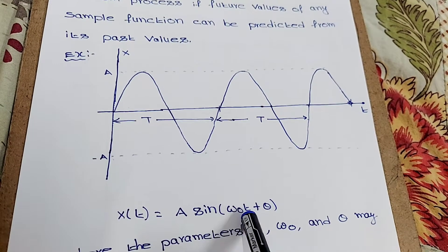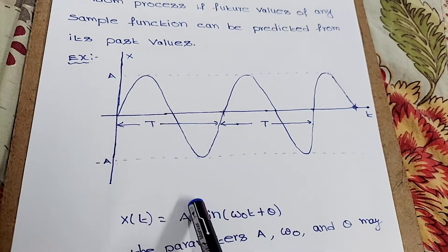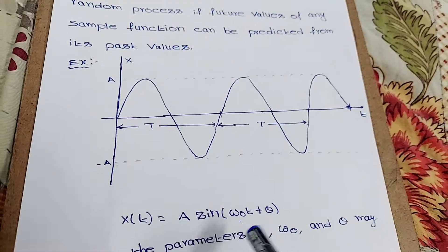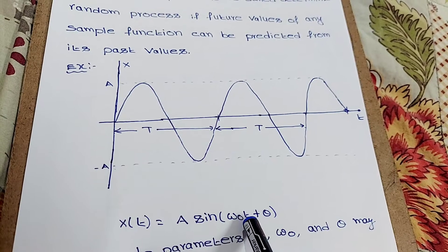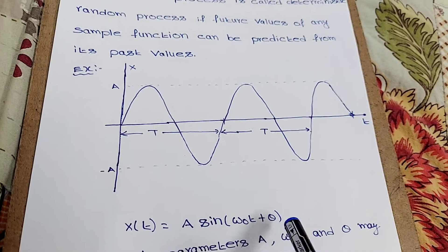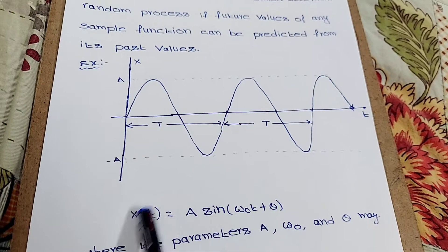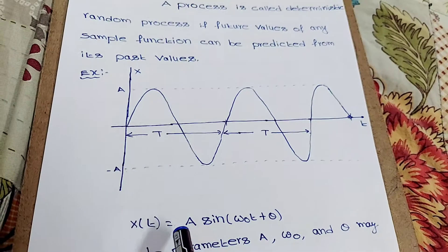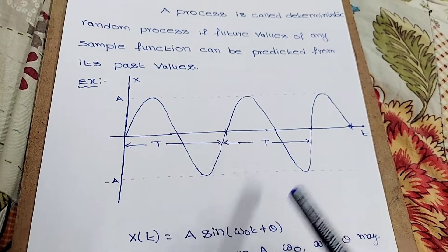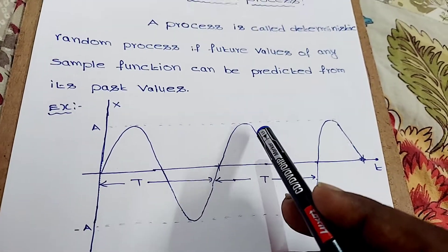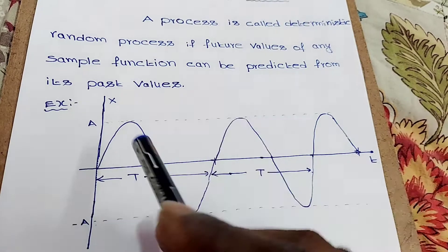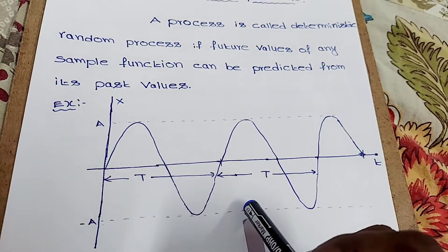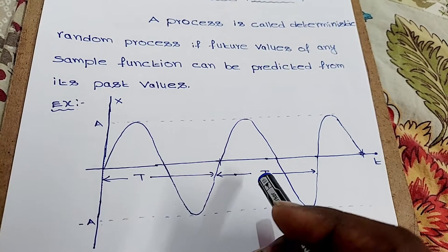Let's see the equation: x(t) = A sin(ω₀t + θ). Here, A is amplitude, ω₀ is frequency, t is time, and θ is phase angle. This is the equation for the deterministic random process, where amplitude is constant and time period is also constant.